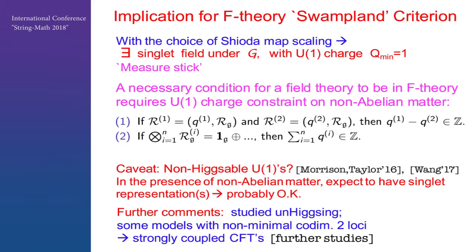Also interesting things happen: we can collide this U(1) with the additional rational sections colliding with zero sections, lose U(1), and get non-abelian unhixing. Some models turn out to be associated with a regime in F-theory that is not necessarily treatable by geometric techniques, namely the strongly coupled SCFT regime, which are interesting to study.